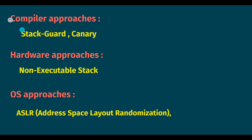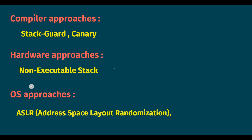Here I have listed some of the countermeasures. The first one is at the compiler level — it includes stack guard or canary. The second one is at the hardware level — it includes non-executable stack, which basically makes the stack non-executable. The third one is at the OS level — it includes ASLR. Let's discuss these a little more in the next slides.